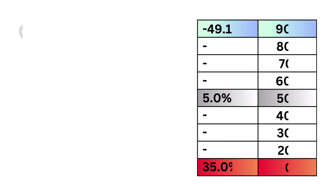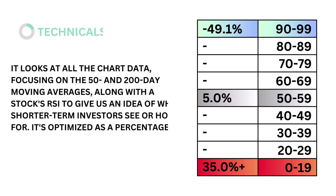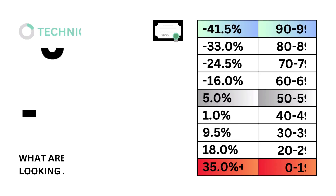Third, technicals. Technicals looks at all the chart data, focusing on the 50- and 200-day moving averages, along with the stock's RSI, to give us an idea of what shorter-term investors see or hope for. It's optimized as a percentage. The models tell us that a technical rate of 5% is considered average. Here's our technicals grade.